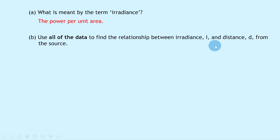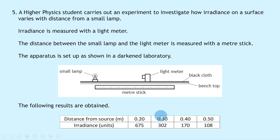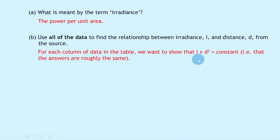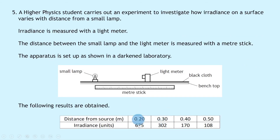Part b says to use all of the data to find the relationship between irradiance I and distance d from the source. Using all data from the table, we want to show that I × d² equals a constant for each column. This is derived from the relationship sheet equation I = k/d², rearranged as I × d² = k. If all columns give roughly the same answer, we've confirmed a constant.